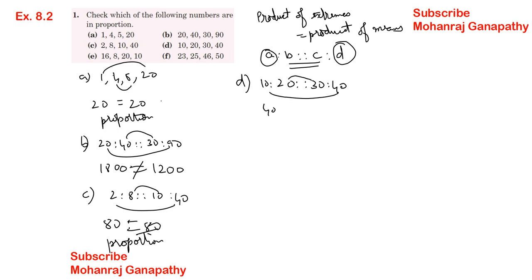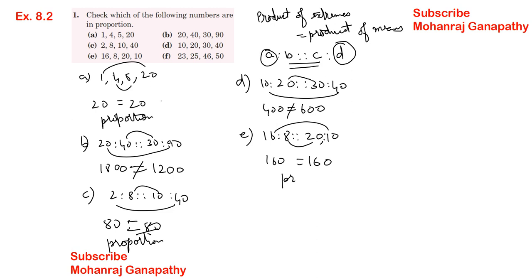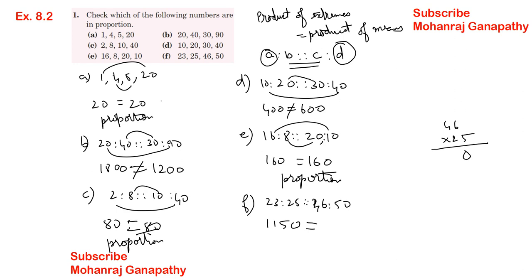Sum 1(e): 16, 8, 20, 10 — 16 into 10 = 160, and 8 into 20 = 160. They are equal so they are in proportion. (f): 23, 25, 46, 50 — 23 into 50 = 1150, and 46 into 25 = 1150. They are equal, therefore they are in proportion.